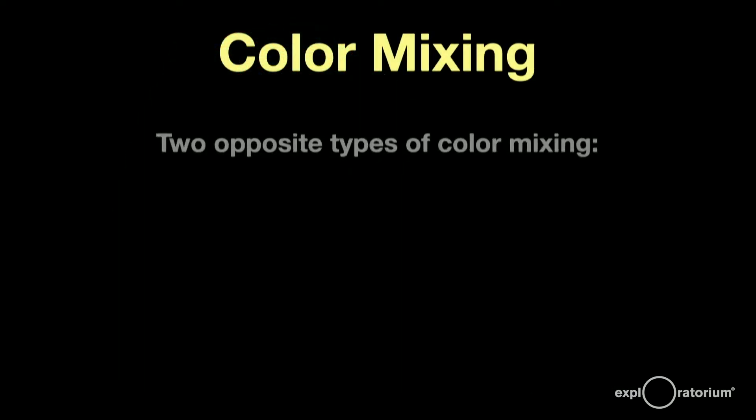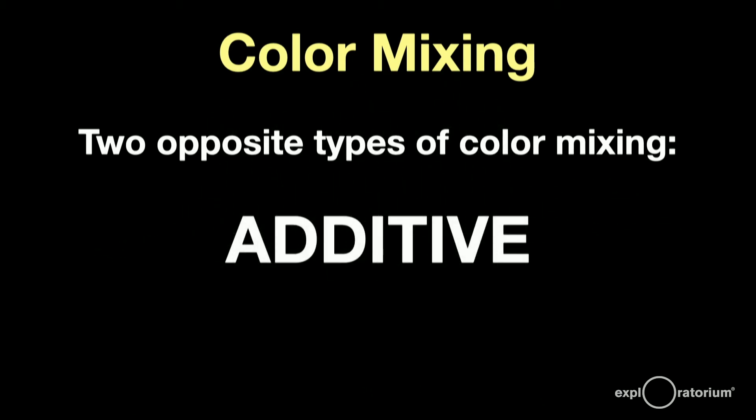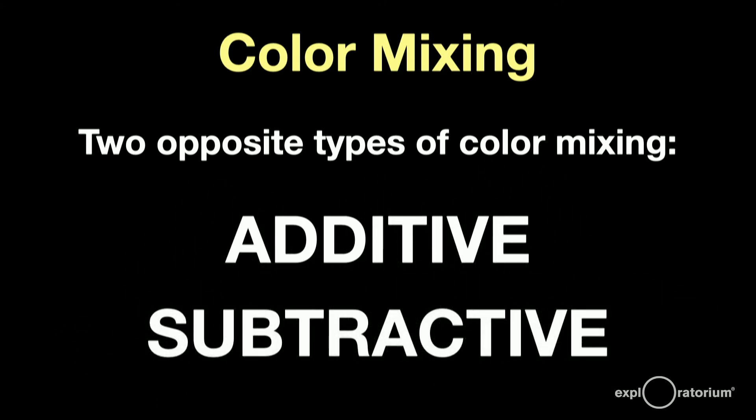There are two basic types of color mixing: additive mixing, when we start with nothing and add color, like in light, and subtractive mixing, where we usually start out with white and then take colors away, like in painting and printing. Let's look at additive color mixing first.